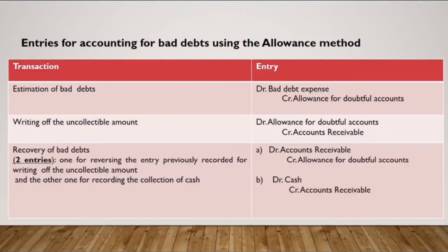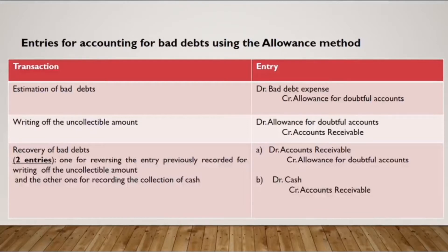We also have two entries to record when we have recovery of bad debts. Recovery means that after I write off a certain amount saying it will not be collectible, the customer unexpectedly comes and pays, perhaps because his financial position improved. I need to record two entries: one for the recovery — reversing the write-off by debiting accounts receivable and crediting allowance for doubtful accounts — and another for recording the cash collection: debit cash and credit accounts receivable. Please remember that when we have any recovery of bad debts, we record two entries.